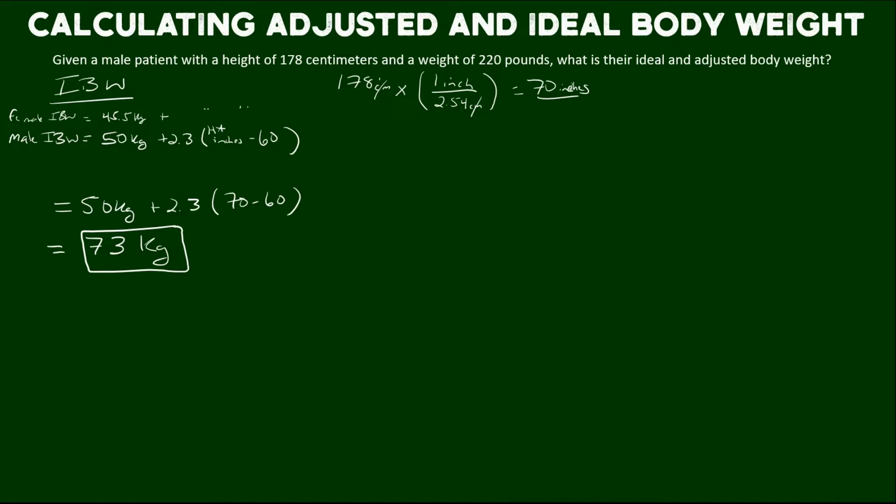So let's see what that looks like when we compare it to their total body weight or their actual body weight of 220 pounds. So let's convert 220 pounds to kilograms, multiplying by the conversion factor for pounds into kilograms. This patient has a total body weight of 100 kilograms. So you can see they're quite a bit higher than their ideal body weight.